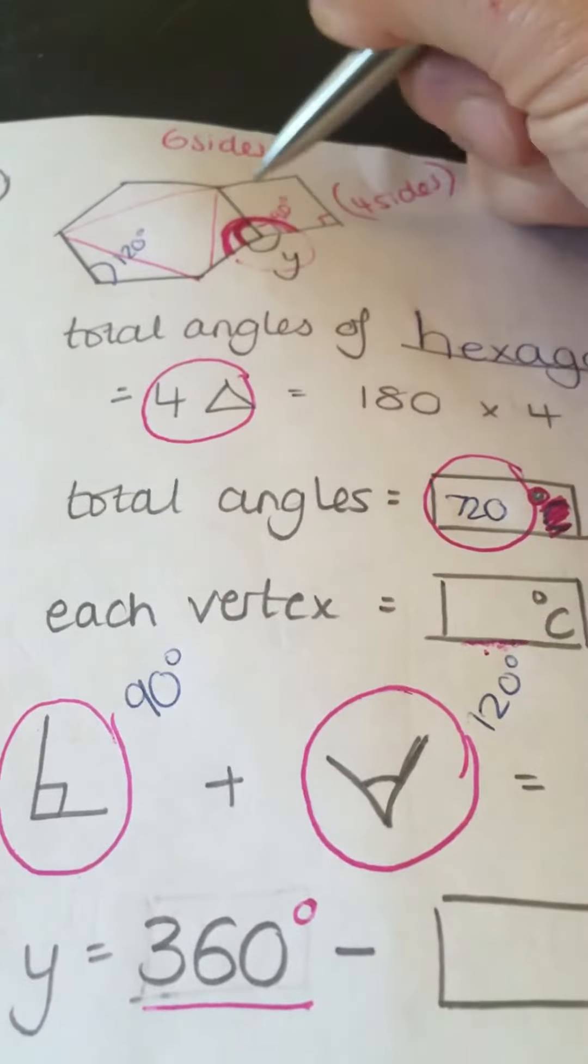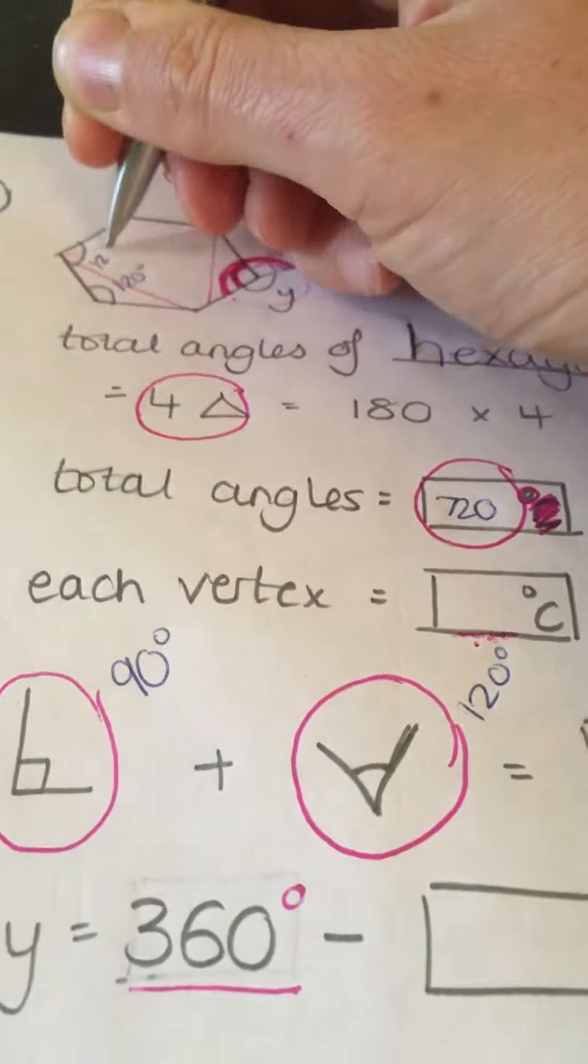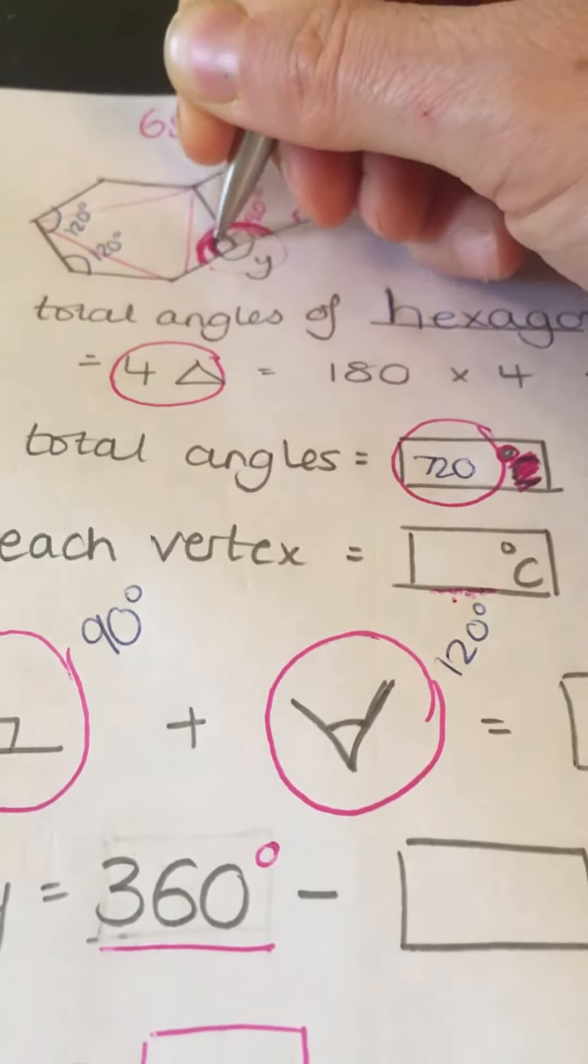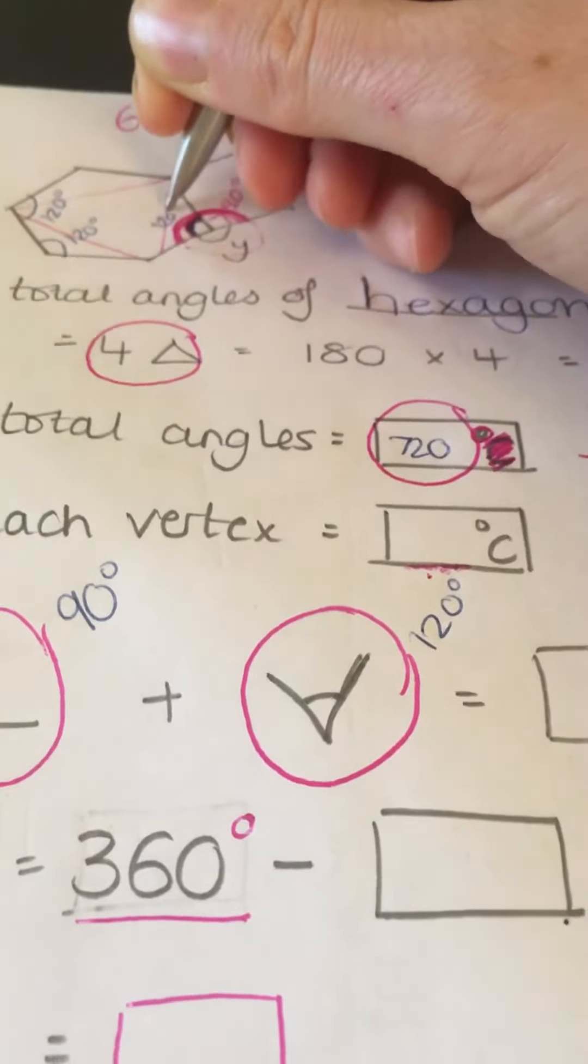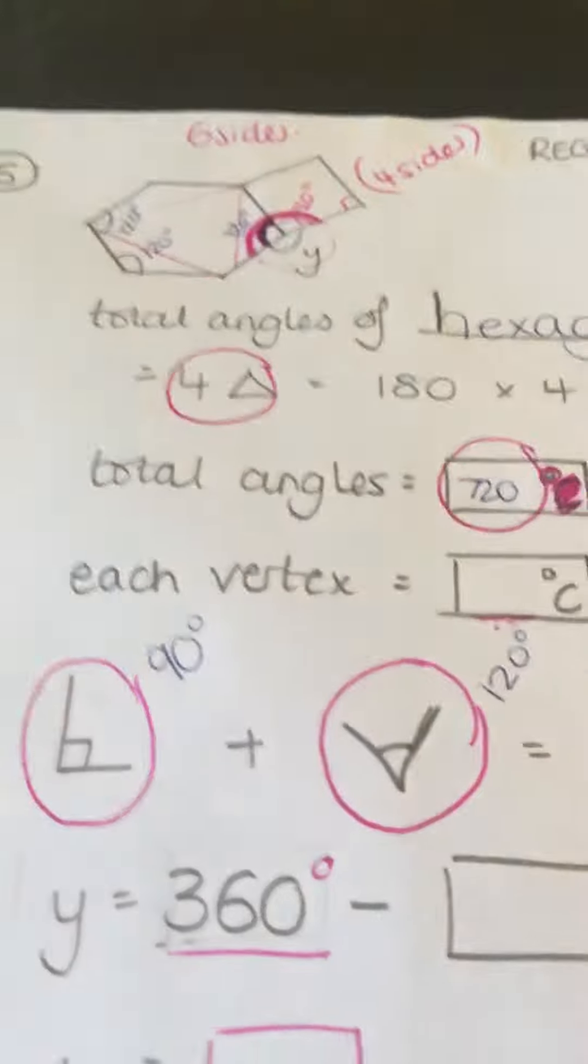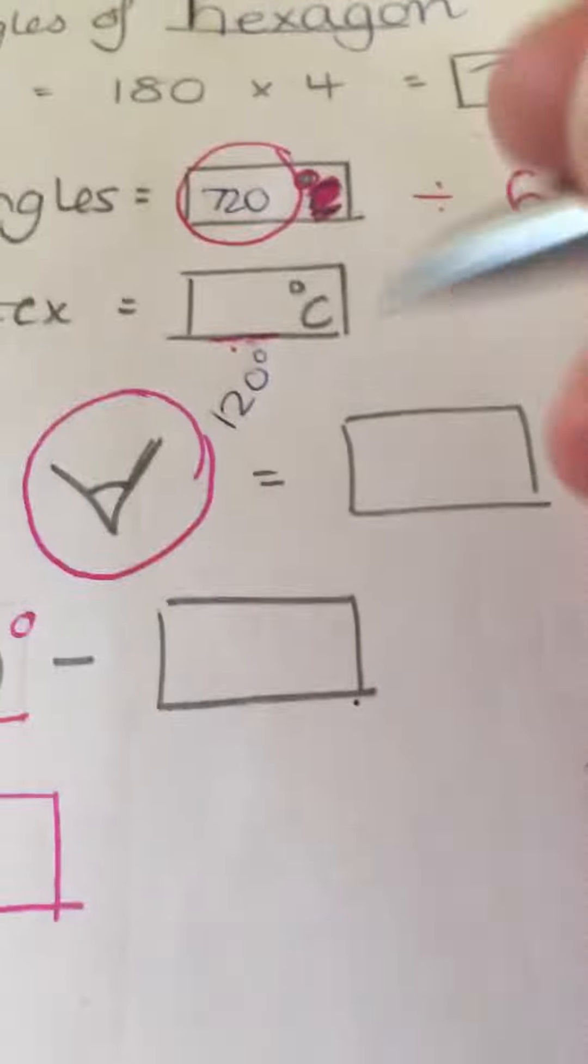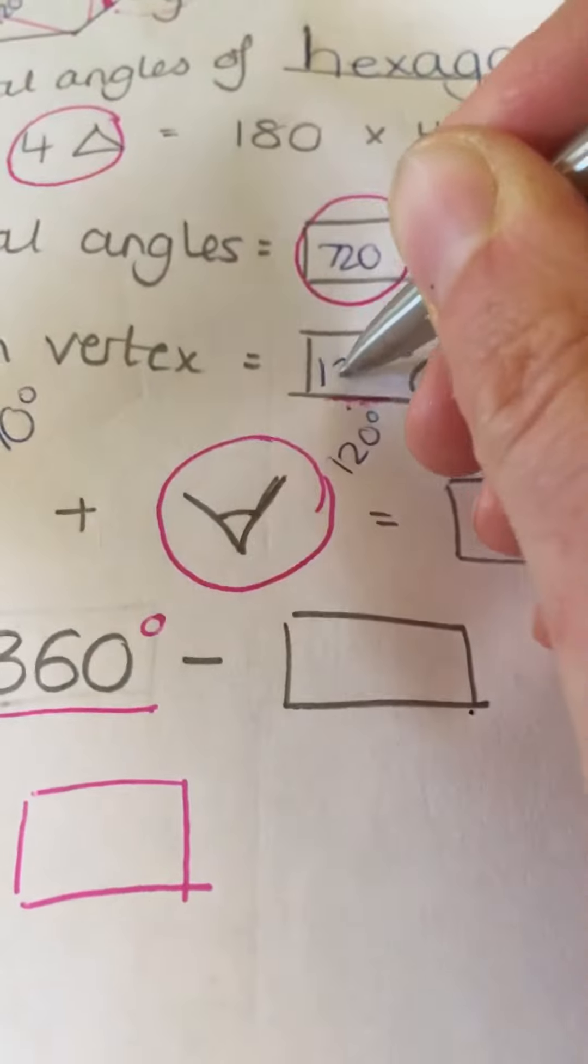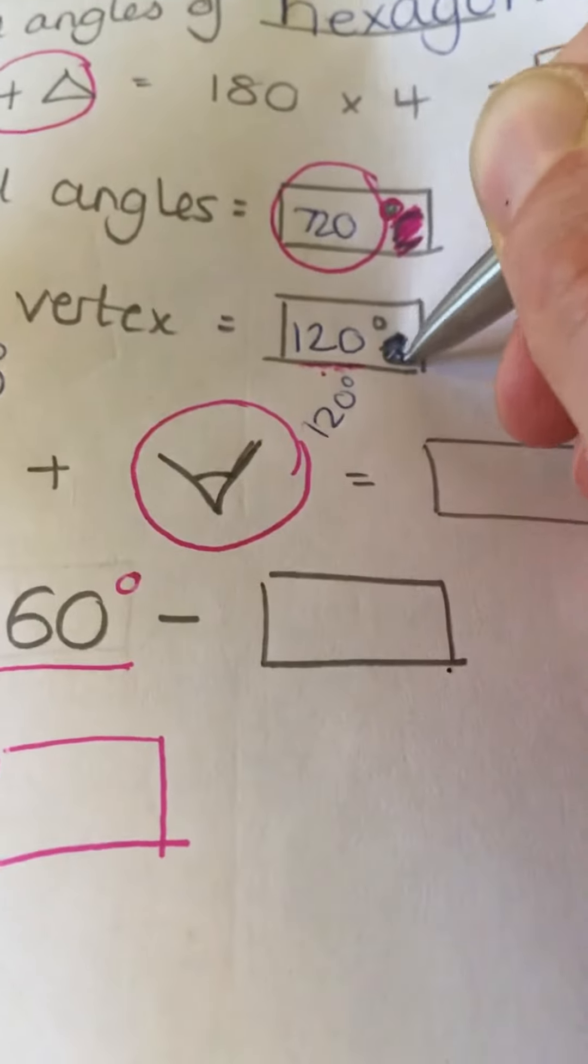And because it's a regular shape, each of the angles is 120. So, that means this angle here is 120 degrees. So, therefore, each vertex I've written up here is 120 degrees.